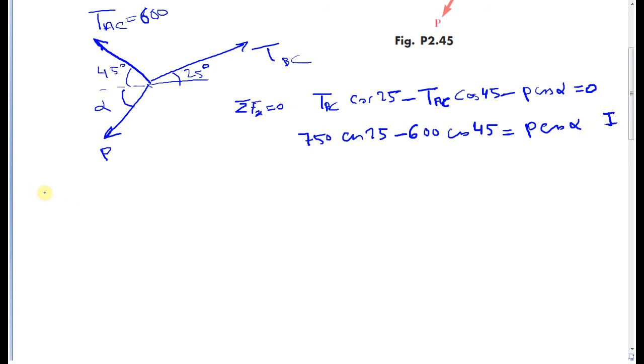Then I write the equilibrium equation in direction y. Sigma fy equals 0, so TBC sine 25 plus TAC sine 45.